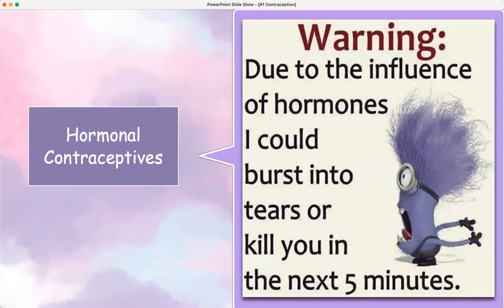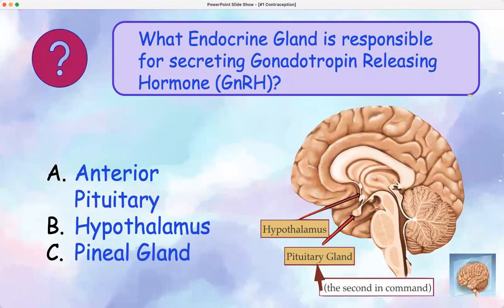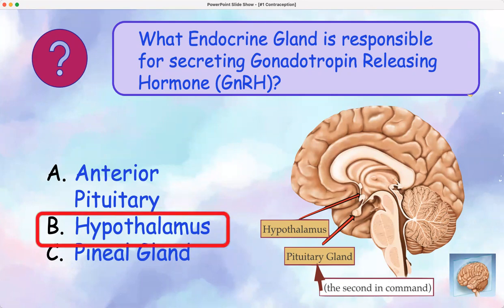Now let's talk about hormonal contraception. We need to go back to our endocrine system. Which endocrine gland is responsible for secreting gonadotropin-releasing hormone? Is it the anterior pituitary, the hypothalamus, or the pineal gland? The answer is your hypothalamus — remember, anything that releases hormones, anything with an 'R' in it like releasing hormone, that's the hypothalamus.